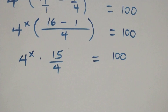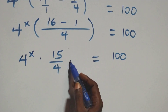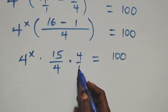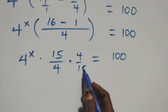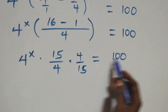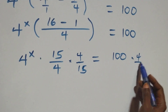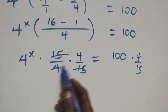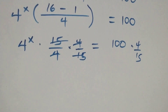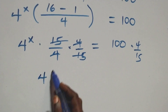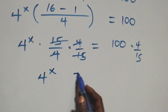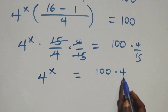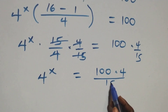Then to remove this 15 over 4, multiply both sides by 4 over 15. This cancels each other, and then we have 4 raised to power x equals to 100 times 4 over 15.